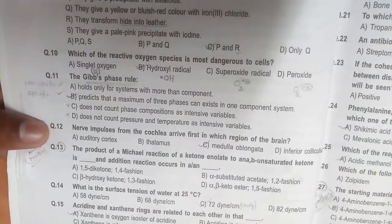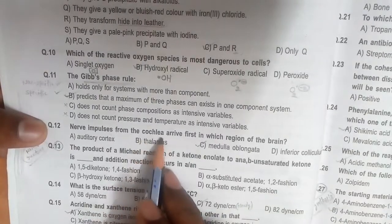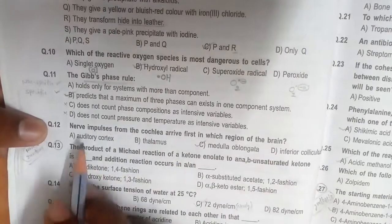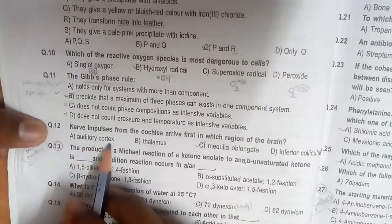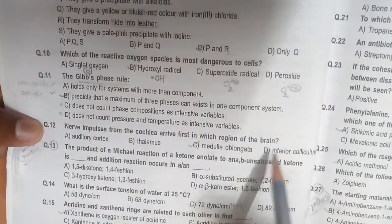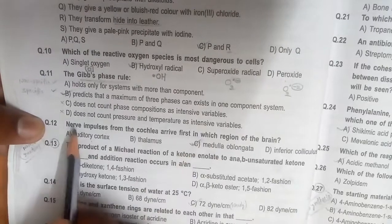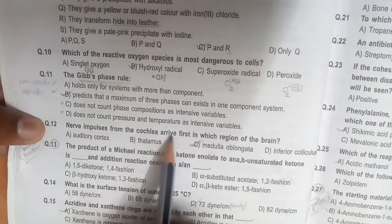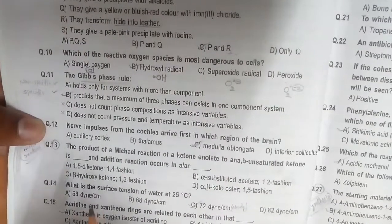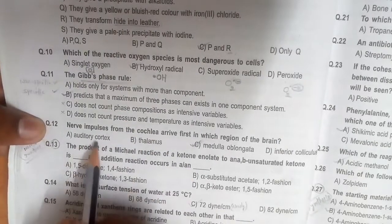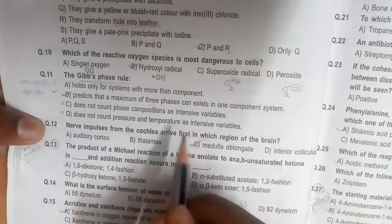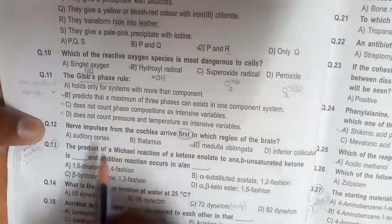Nerve impulses from the cochlea arrive first in which region of the brain? Generally, this is represented in the auditory cortex. Options A, B, and D are non-specific, but medulla oblongata is the correct answer. The nerve impulses arrive first in medulla oblongata. They will arrive at the auditory cortex, thalamus, and inferior colliculus later. You have to see 'first' in this question.